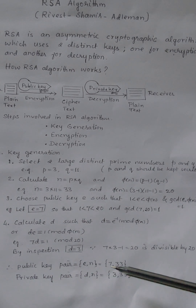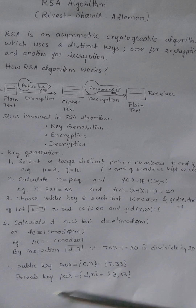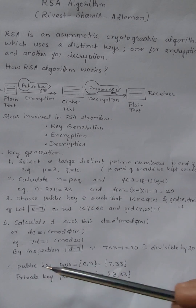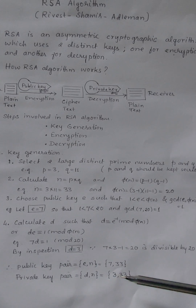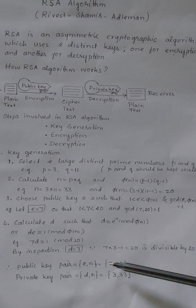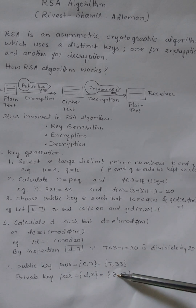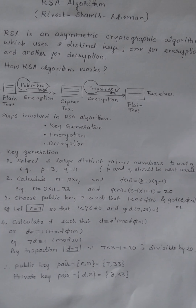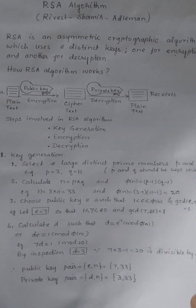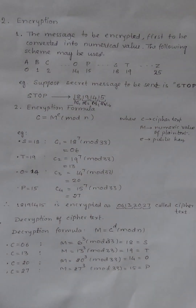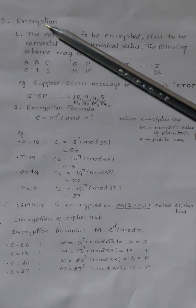So the public key pair is (E, N) = (7, 33) and the private key pair is (D, N) = (3, 33). The public key and private key are distinct — they are different. If they were the same, it would become symmetric key encryption.